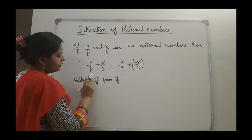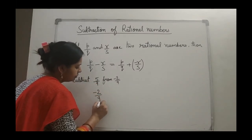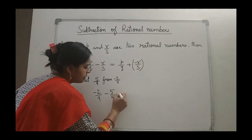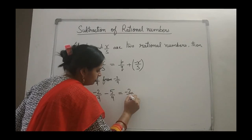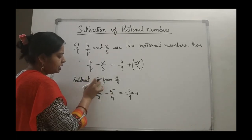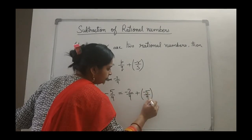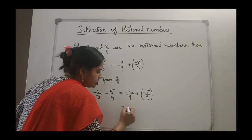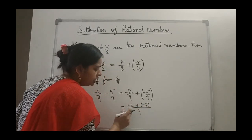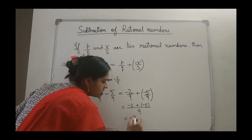For example, subtract 5 by 9 from minus 2 by 9. From minus 2 by 9 we have to subtract, so we write minus 2 by 9 minus 5 by 9. Subtraction equals minus 2 by 9 plus the additive inverse of 5 by 9. The additive inverse of 5 by 9 is minus 5 by 9. The base is common and the numerators are minus 2 plus minus 5. Two negative integers, so they can be added with the negative sign. The answer is minus 7 by 9.